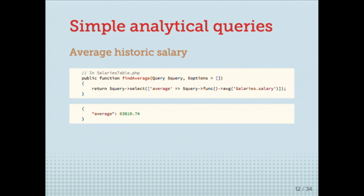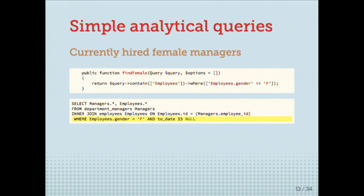I create a custom finder called find_average, which selects the average using a custom average function on salaries.salary. That's simple. So let's try to communicate it a bit more. I want the currently hired female managers. In the managers table I create a custom finder called find_female — it receives query and options — and I say: query contains employees (because managers belongs to employees) with an inner join where employee.gender equals 'F'. The to_date IS NULL condition was automatically added from the before_find callback.